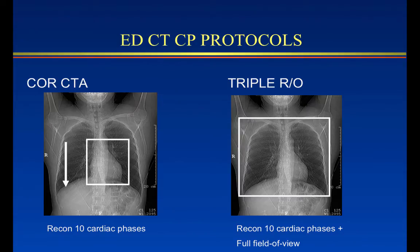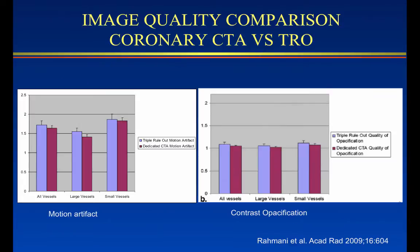The protocol for doing these studies is fairly well known. Dedicated coronary CTA is done with a field of view limited to the heart, whereas triple rollout has a much wider field of view intended to encompass the entire thorax. Reconstruction is done either with retrospective 10 cardiac phases or, more often currently, prospectively — and that can be done regardless of whether one is doing coronary CTA or triple rollout. We looked at image quality some years ago, both for motion artifact and contrast opacification, and found there was really not a significant difference. If triple rollout is done properly, one will not see a degradation of image quality versus coronary CTA.